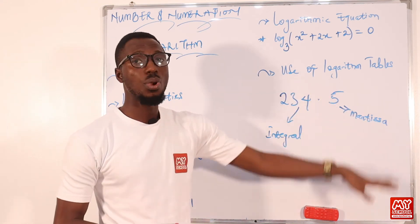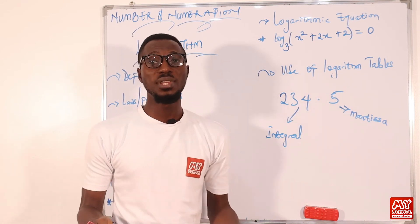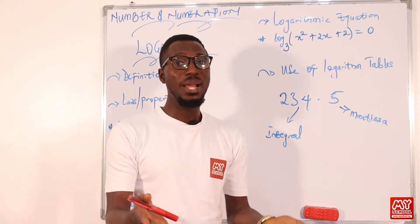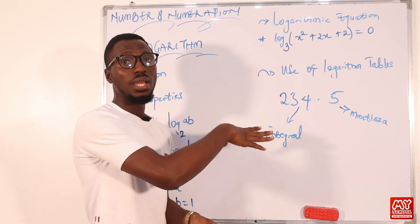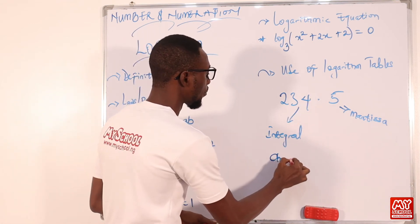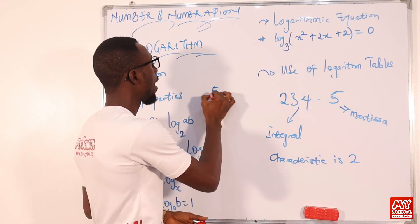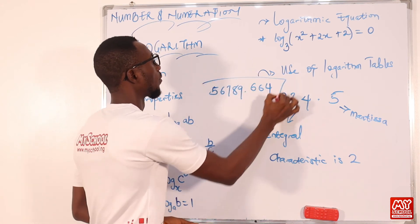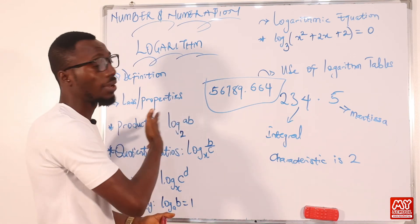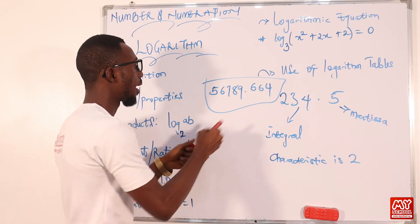There are ways to find your characteristic when using a logarithm table. You can use the inspection or observation method, or the standard form method. Using inspection: count the digits in the integral part and subtract 1. For example, 122.345 has three digits before the decimal point — 3 minus 1 gives a characteristic of 2. For 56789, you count five digits and subtract 1, giving a characteristic of 4.